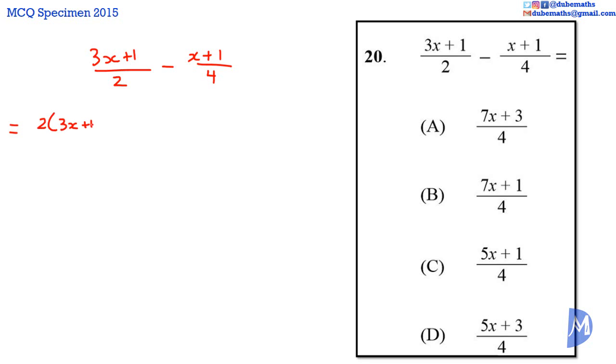We get 2 multiplied by 3x plus 1 and 2 multiplied by 2 we know is equal to 4. Adding gives 2 multiplied by 3x plus 1 subtract x plus 1, all over 4.